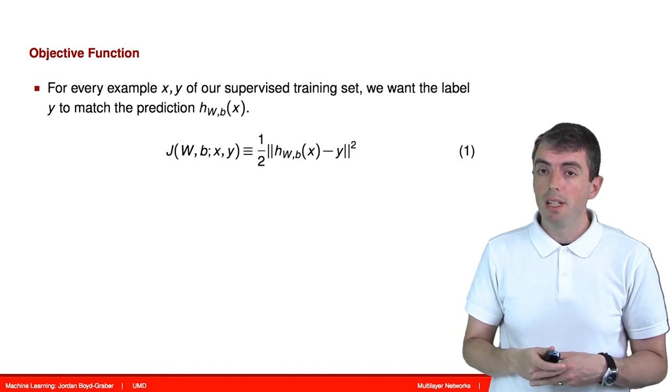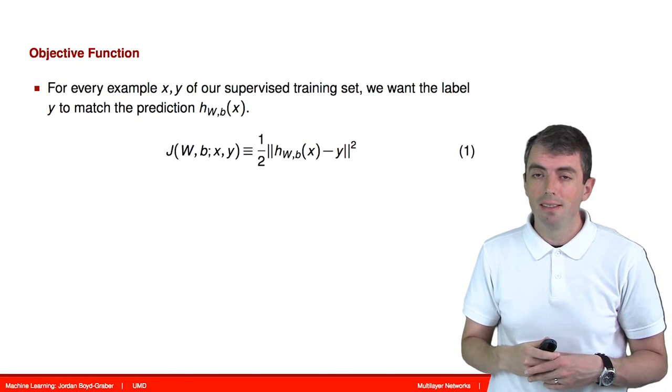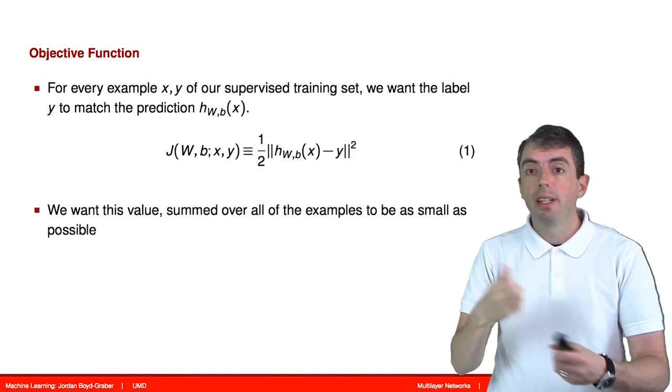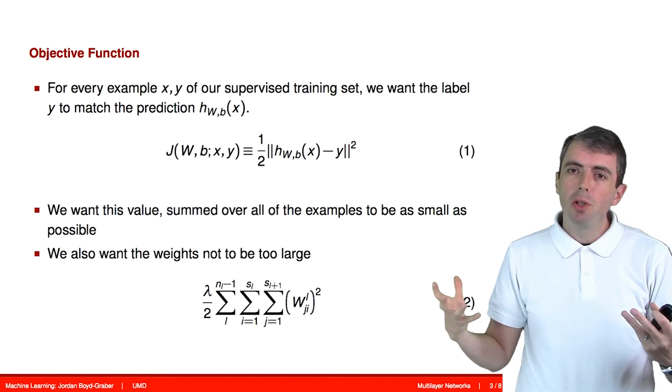We'll take a standard squared loss approach here, and we'll multiply it by one half so that the derivatives work out correctly. We'll also sum this over all examples to get a sense of how much error we're making on all of the examples.